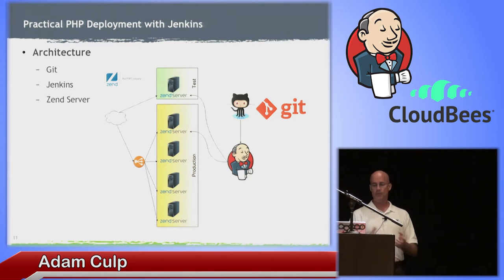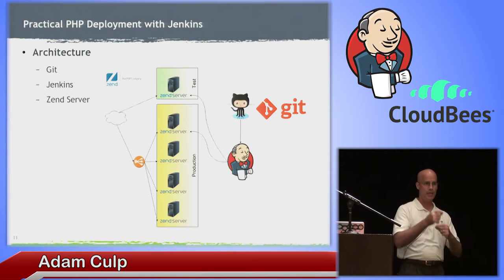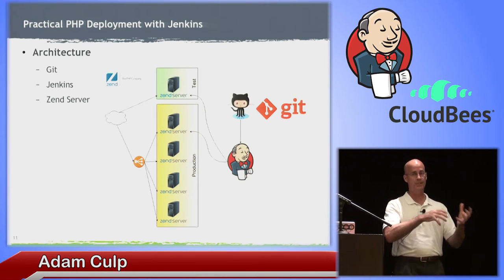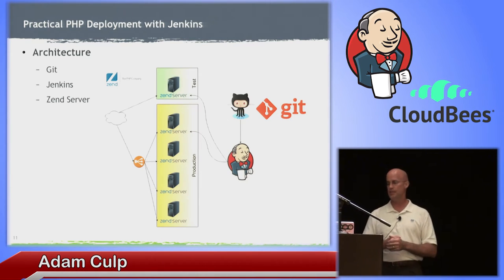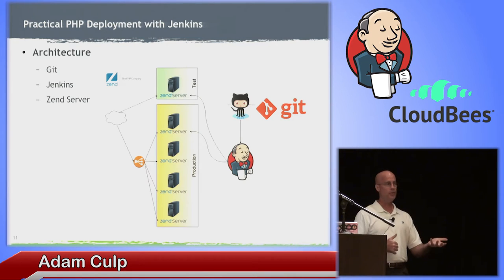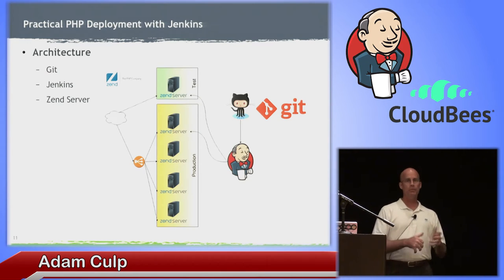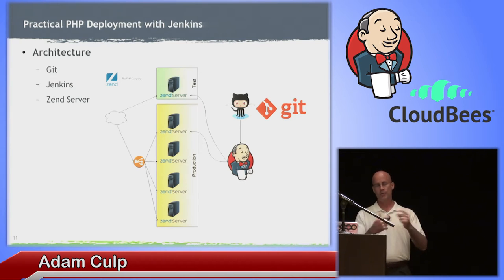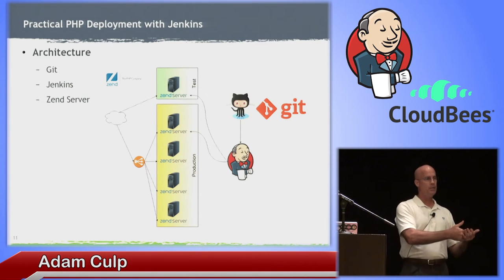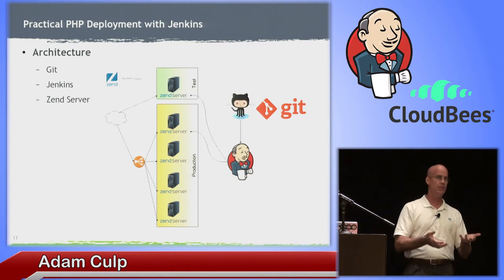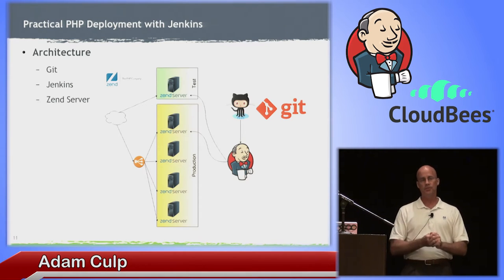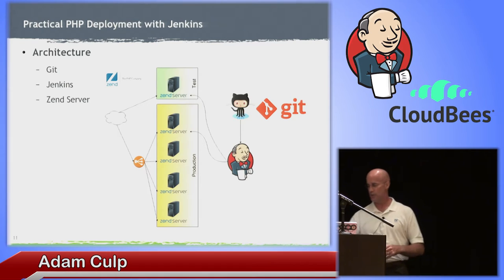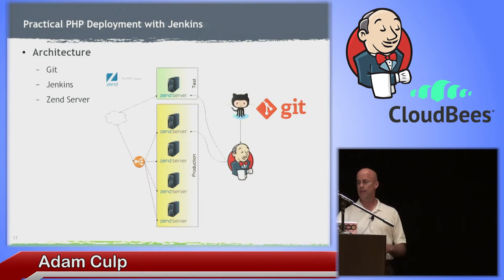I'm going to use a local Git repository and work from that. I'm also going to be using Jenkins to do my deployment, with things set up in a step-by-step process. I'm also going to be using Zend Server. I'm using it because it makes the automation process a little bit easier. It's not the only way to do things, but Zend Server does have tools to make it easier.